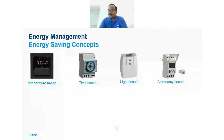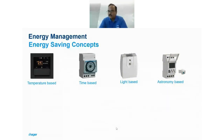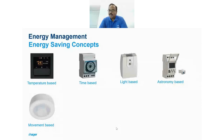There is even an astronomy-based concept where, depending on location, street lights can be controlled. A normal time-based switch doesn't account for seasonal variation — in summer there is enough sunlight until 7 PM, so why switch on street lamps at 6? An astronomy-based controller knows the location and automatically calculates sunrise and sunset times.